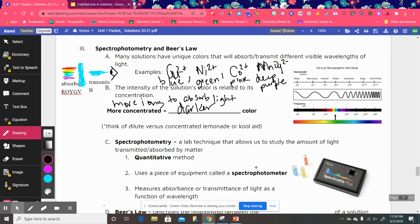So you have a more concentrated solution, you have more ions there that are absorbing the wavelengths of light. And that's going to make it a darker color. So if you think of dilute versus concentrated lemonade or Kool-Aid, the more concentrated Kool-Aid or lemonade is going to appear darker. It's absorbing more light and transmitting less.